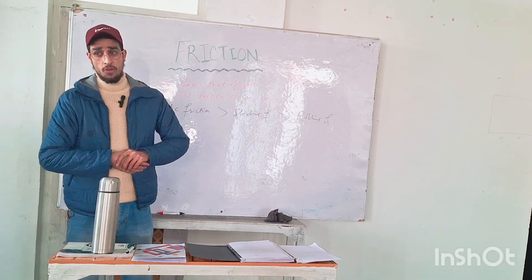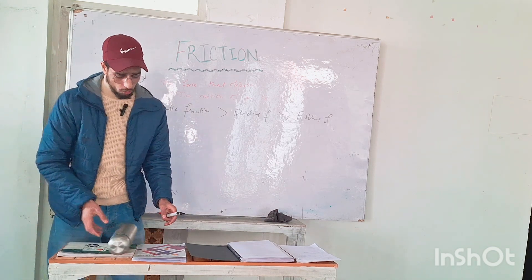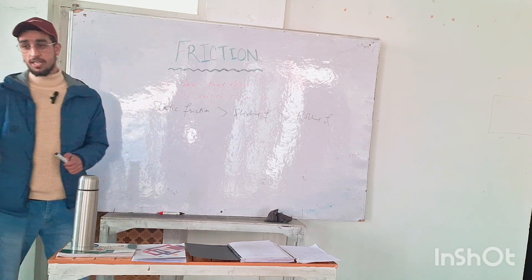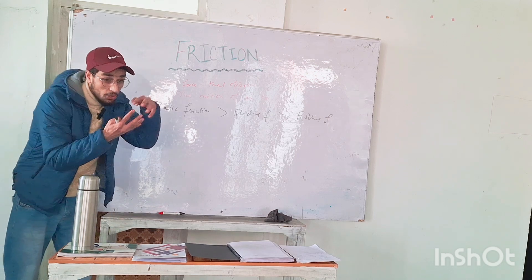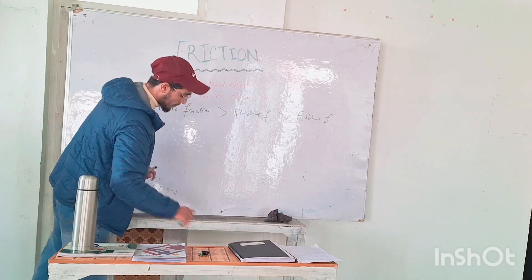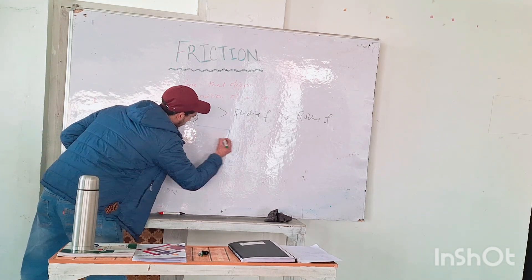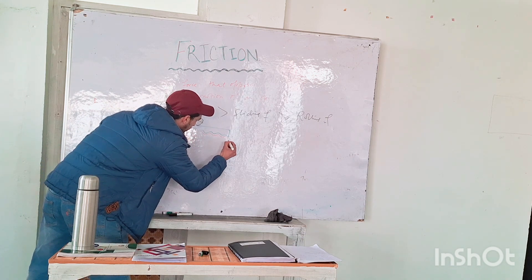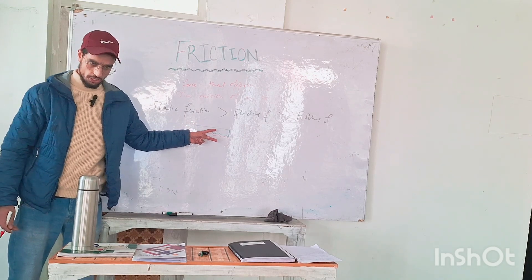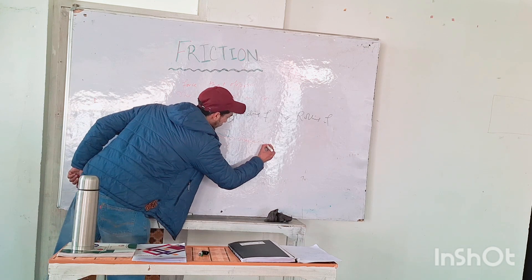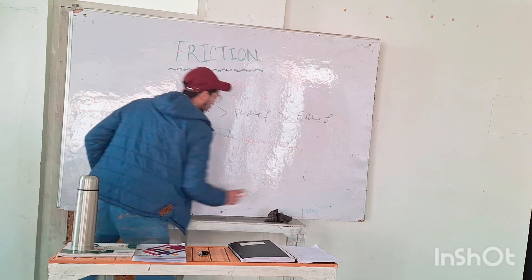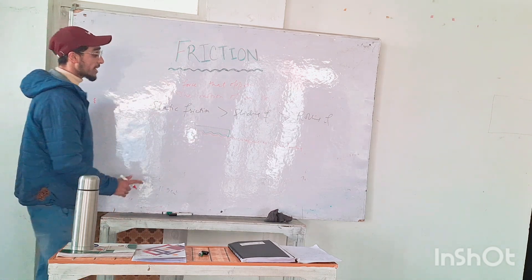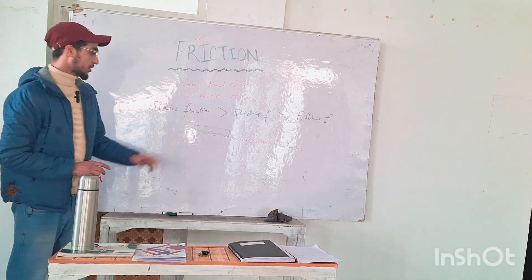Friction is very important in our day-to-day life. For example, when a player kicks a football, after some time the ball will stop by itself because of the force of friction between the ball and the surface. Both surfaces have irregularities and because of these irregularities interlocking occurs. To unlock them we need more energy — that's the force of friction at work.